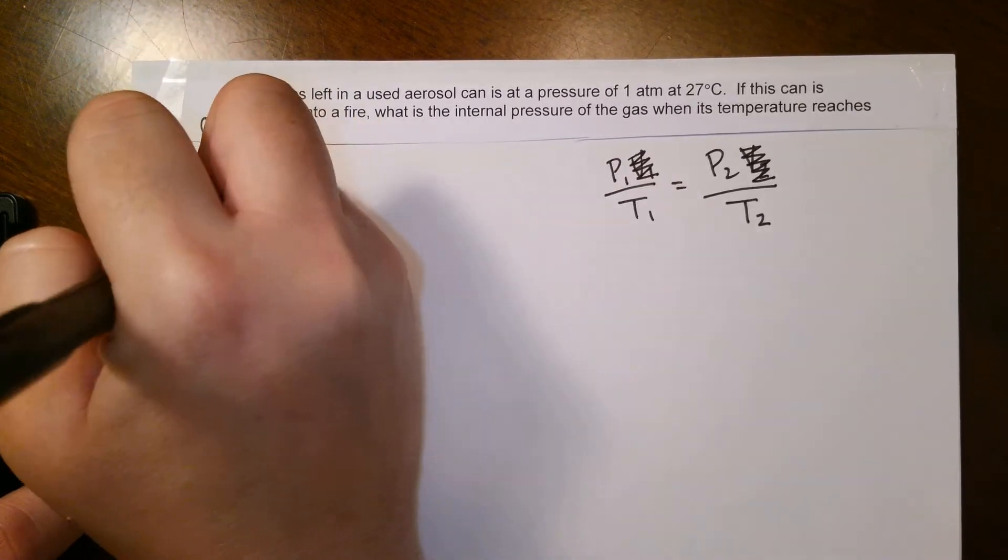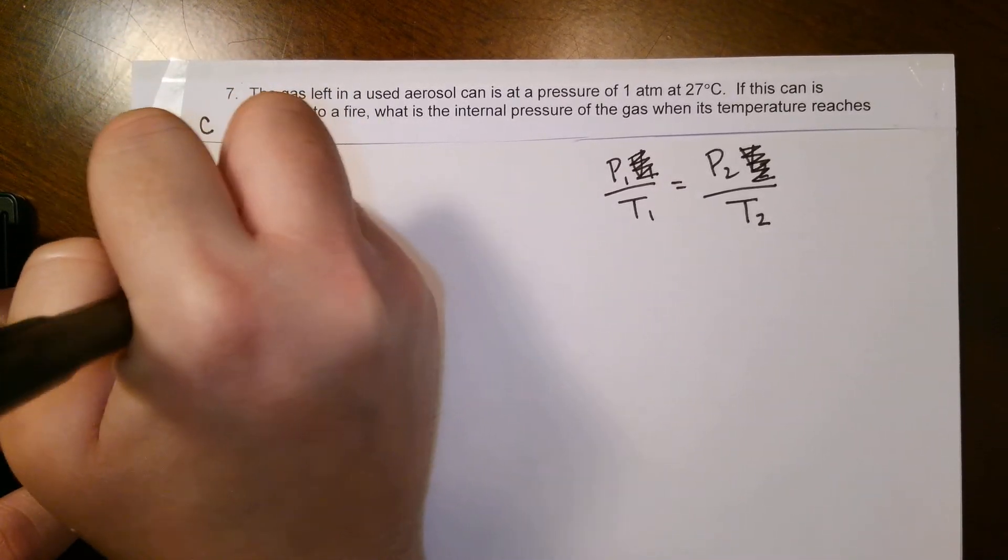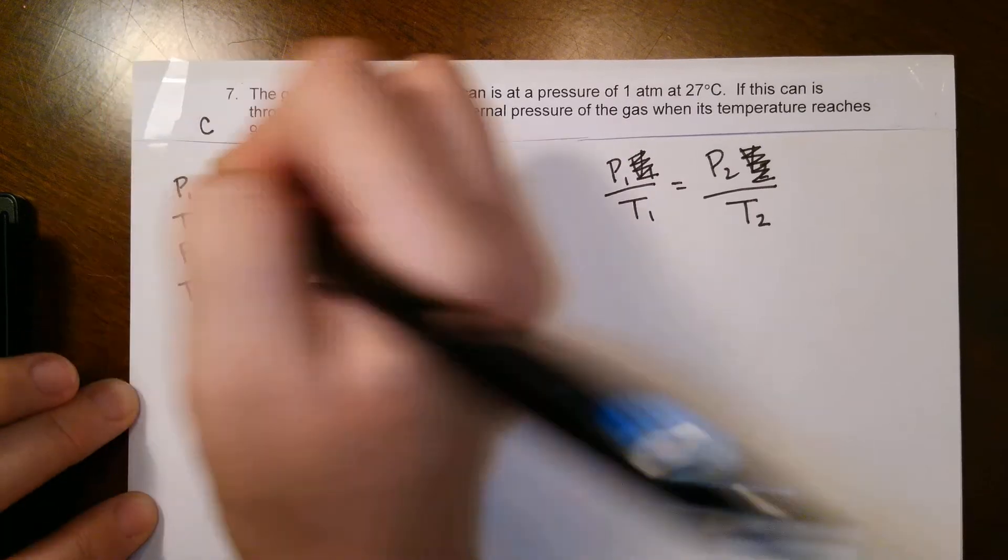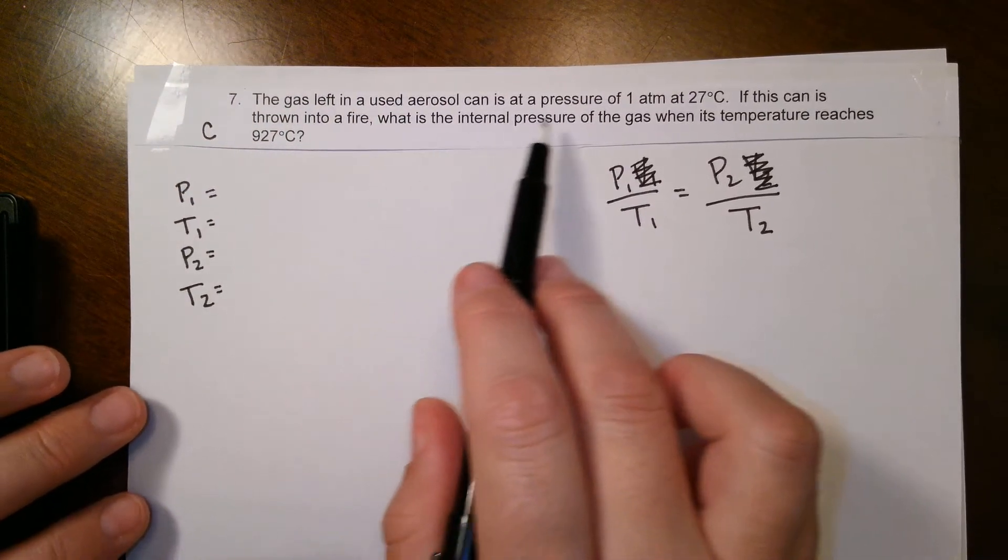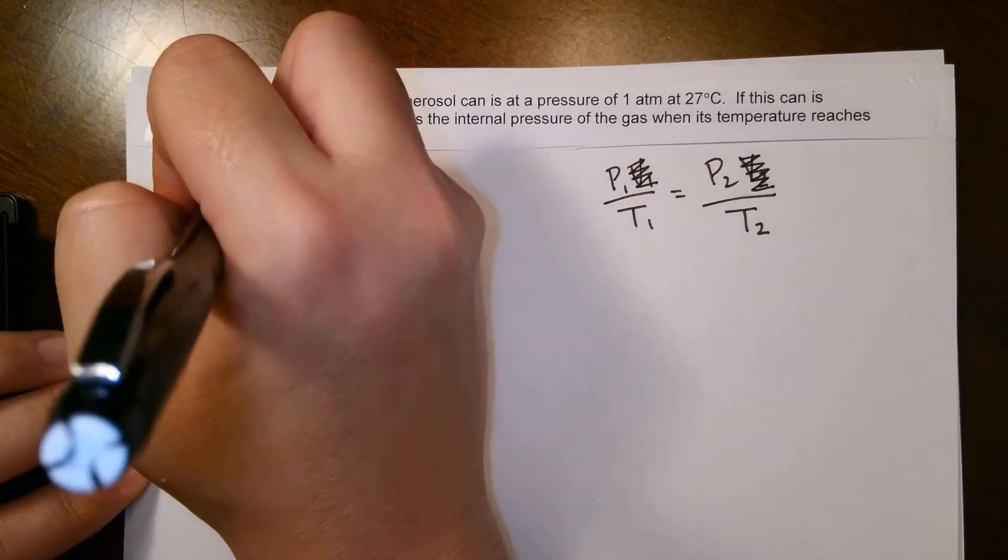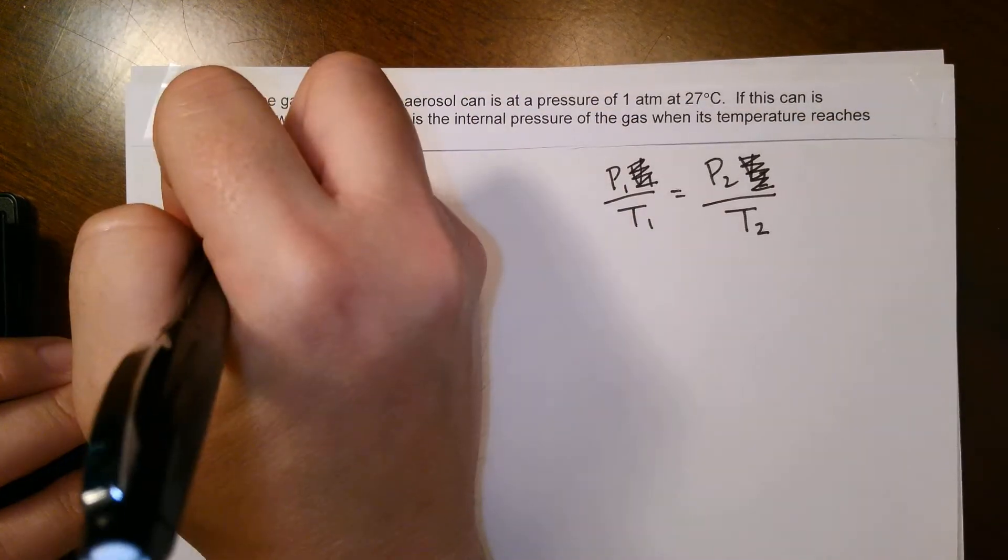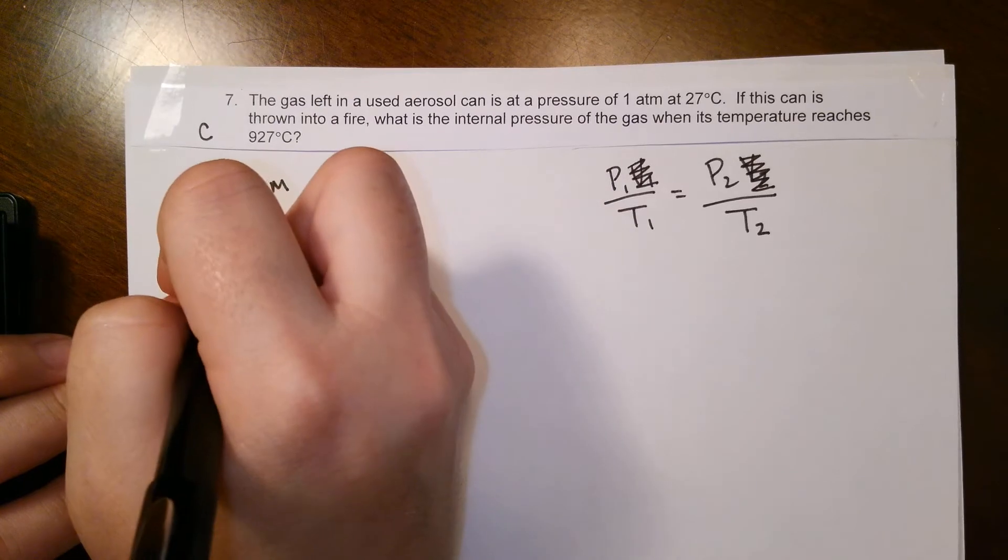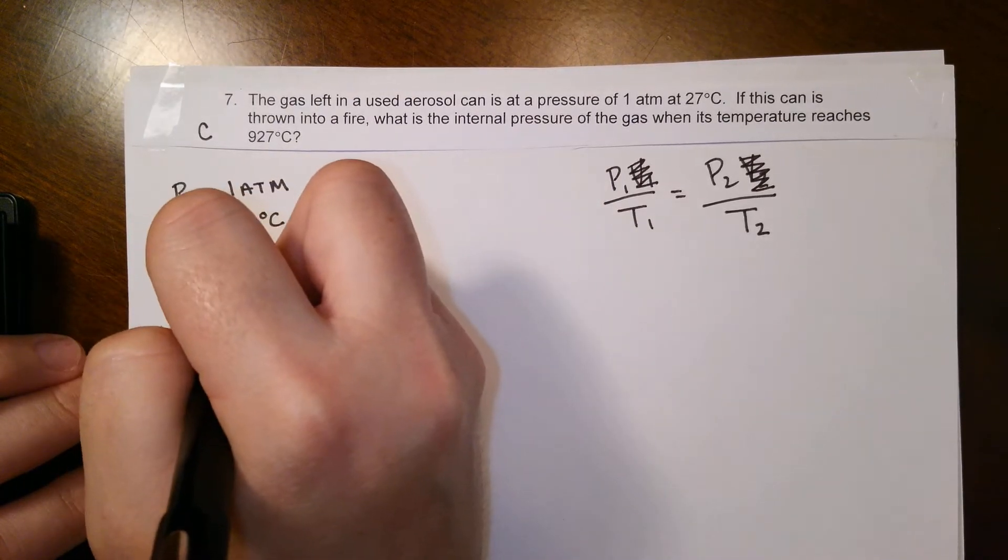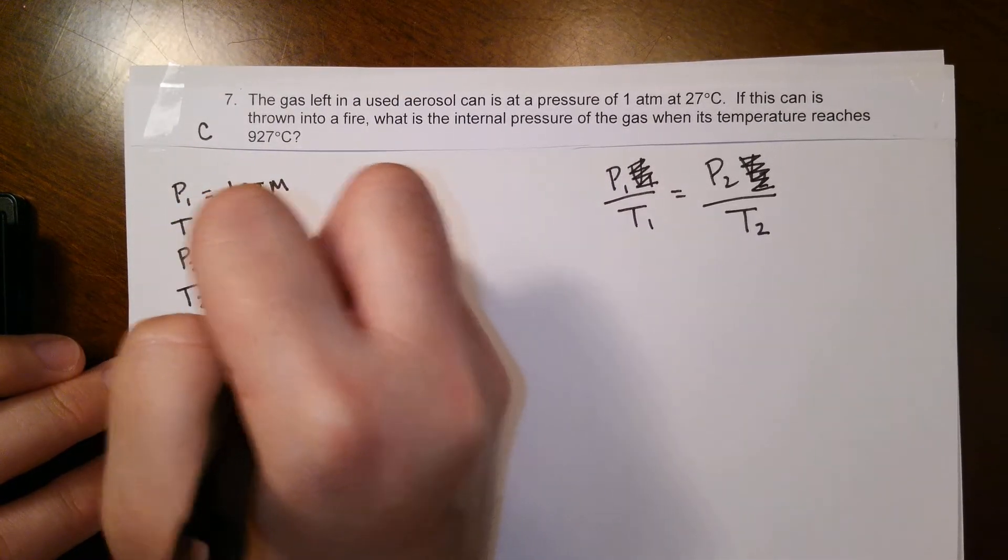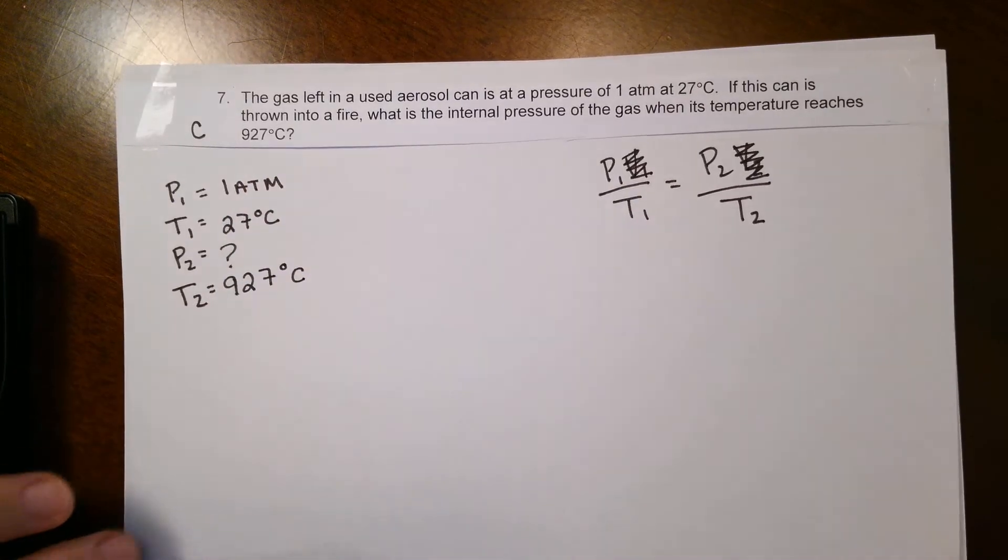P1, T1, P2, and T2. We see the first pressure is 1 atm. The temperature is 27 degrees Celsius. We want to know the pressure when it heats up to 927 degrees Celsius.